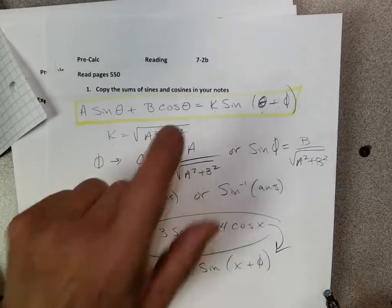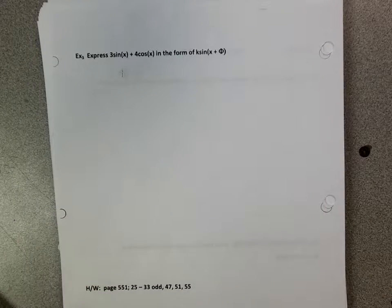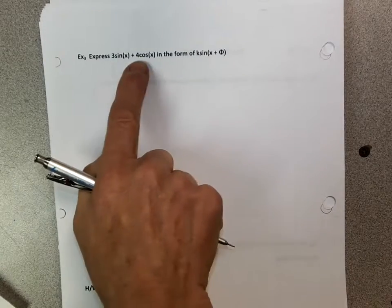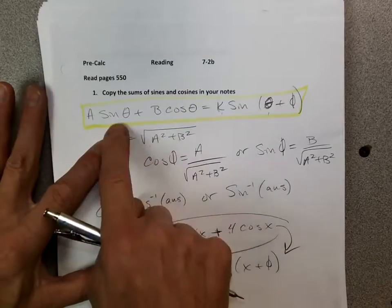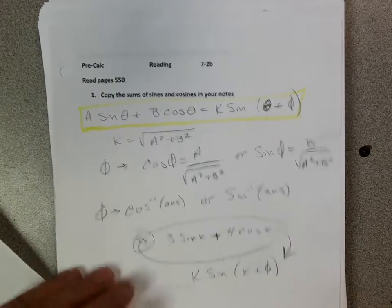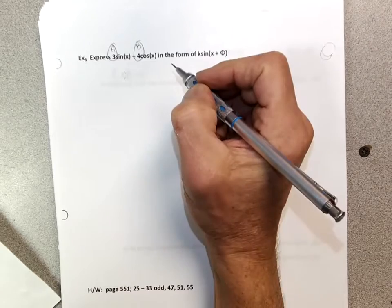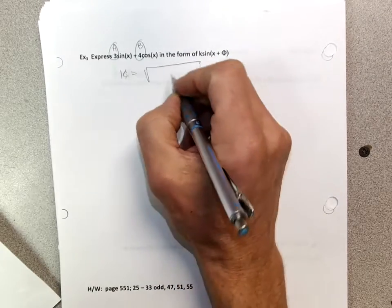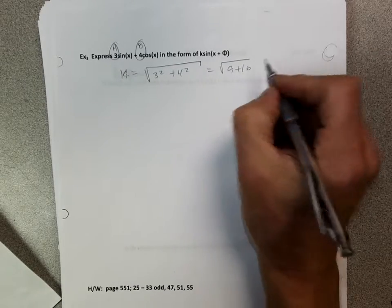So let's take a look at example three. We're left with a sine plus a cosine, same variable, same angle, but we want to rewrite it as a single sine. So we look at our formula. In order to rewrite it as k sine of x plus phi, we're going to find k first. This would be a, this would be b, and k is just going to equal the square root of 3 squared plus 4 squared, which is 9 plus 16, which is 5.